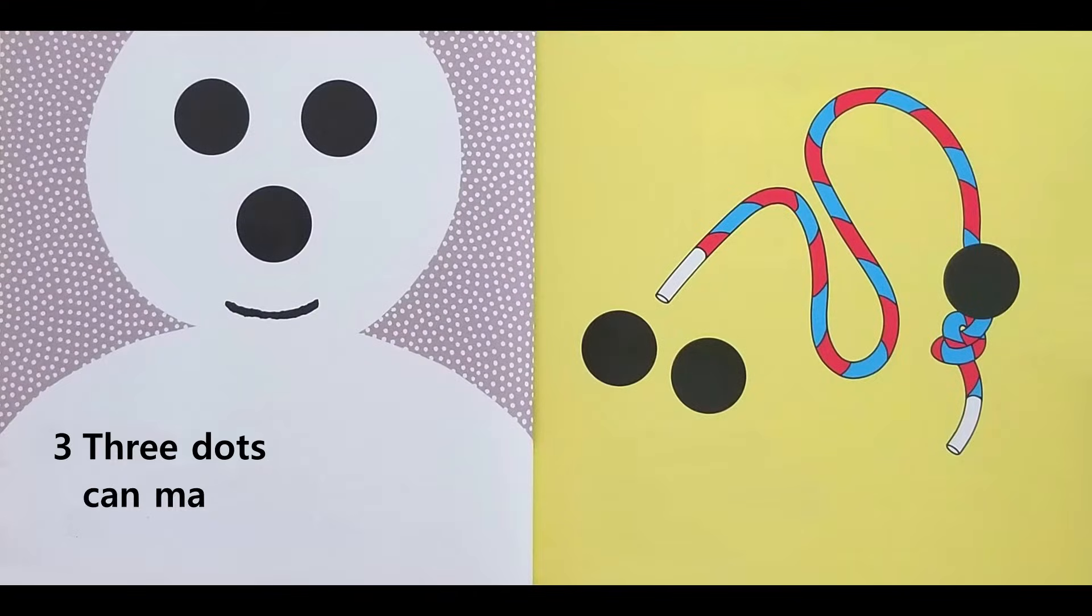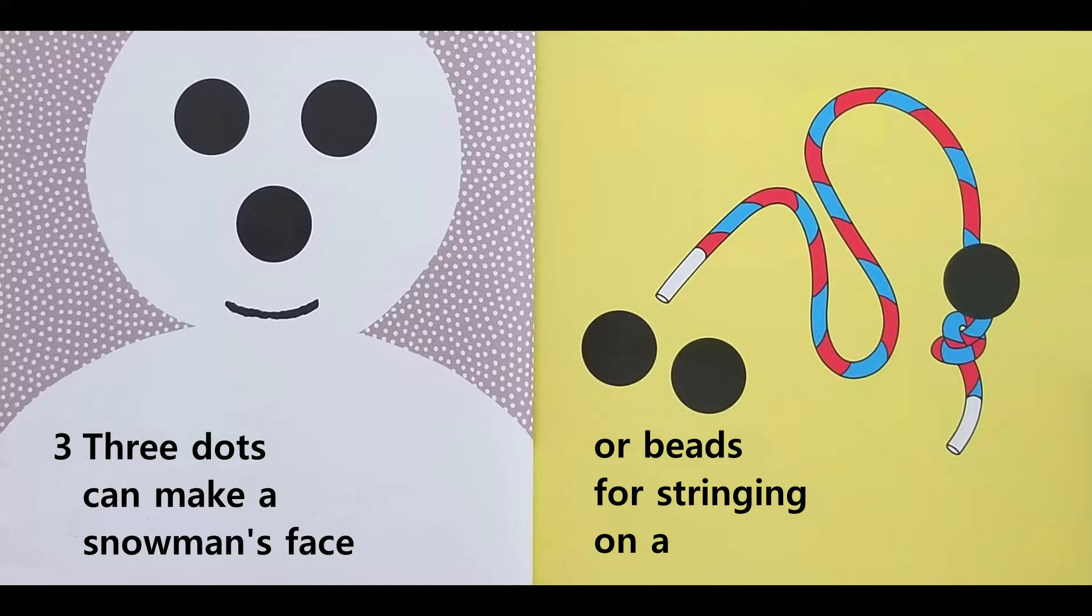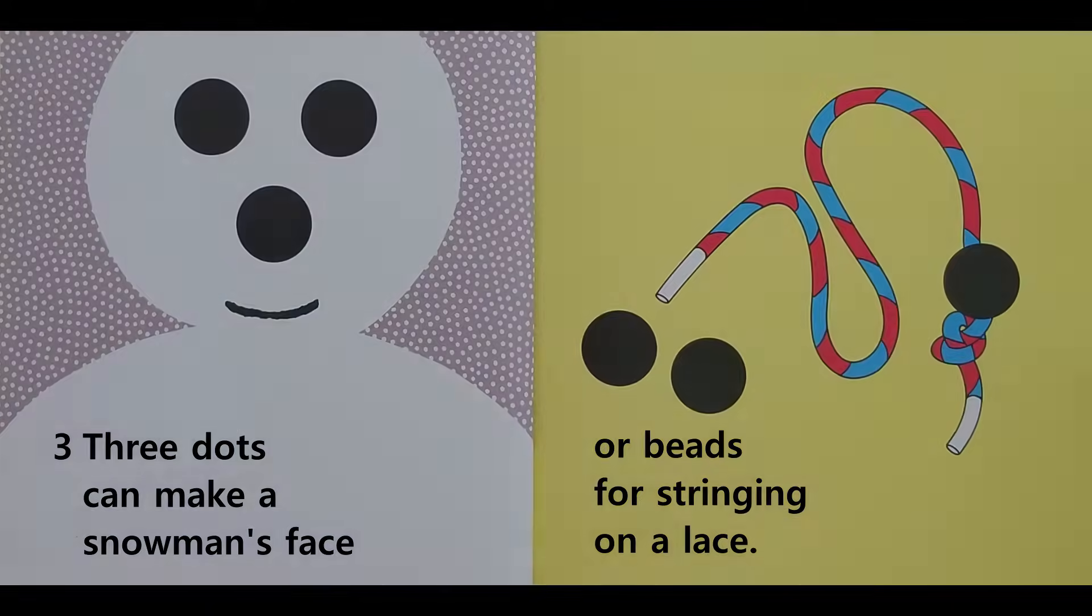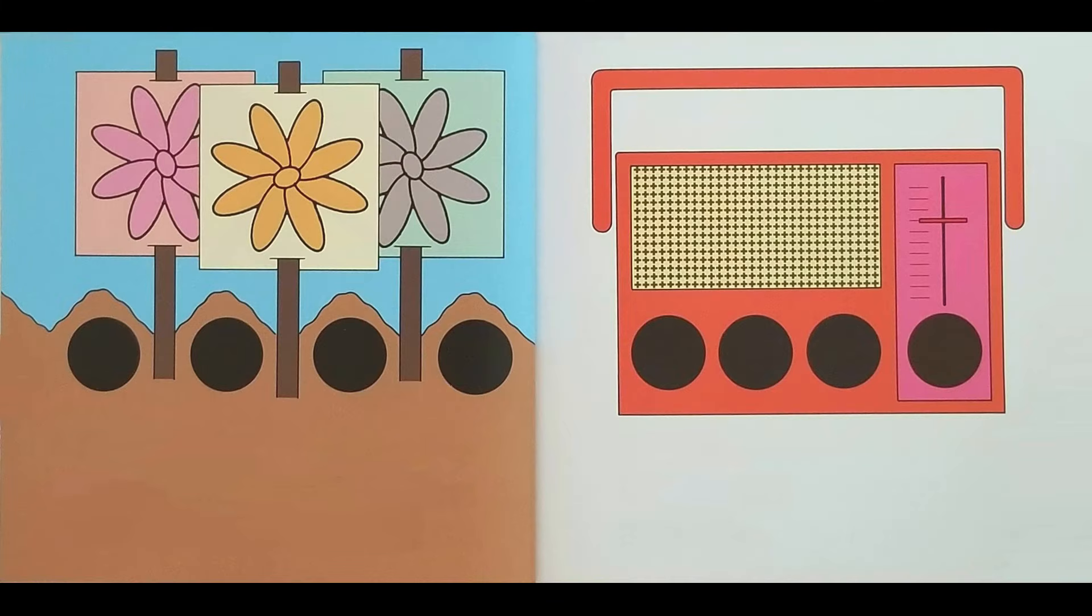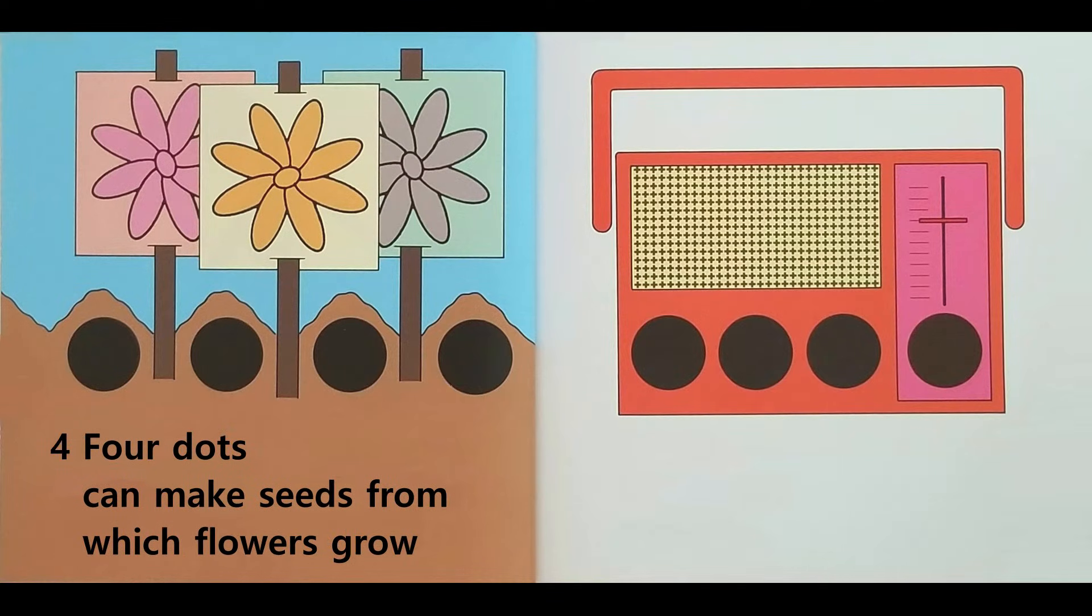Three dots can make a snowman's face or beads for stringing on a lace. Four dots can make seeds from which flowers grow or the knobs on a radio.